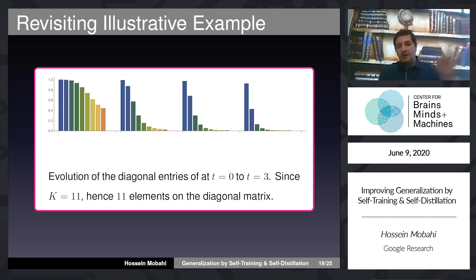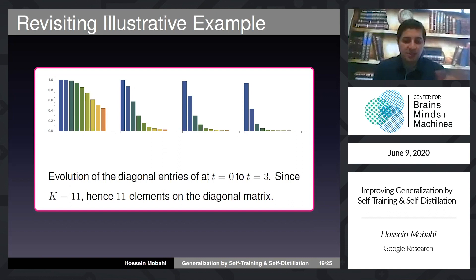Let's look at how the diagonal components evolve. With 11 training points, the matrix G is 11×11 with 11 diagonal components. Initially, these components are distributed with some larger and some smaller values. After one round of self-distillation, the smaller ones quickly shrink and only the larger ones remain significant. After continued rounds, the process exaggerates further, and at the end only two or three bases remain to represent the function.